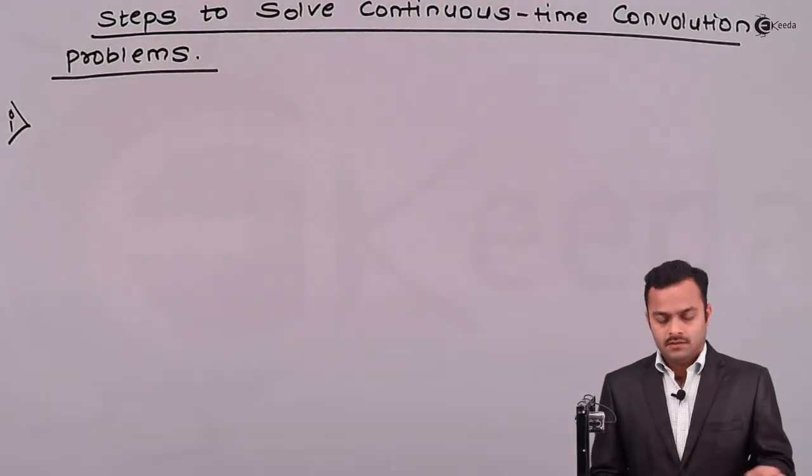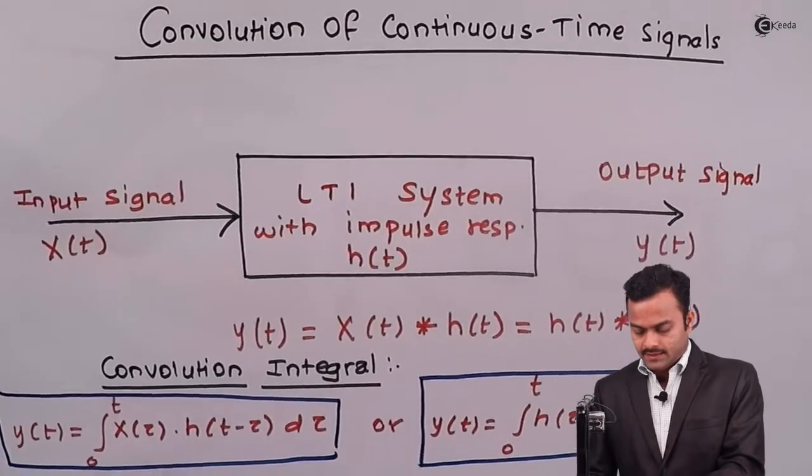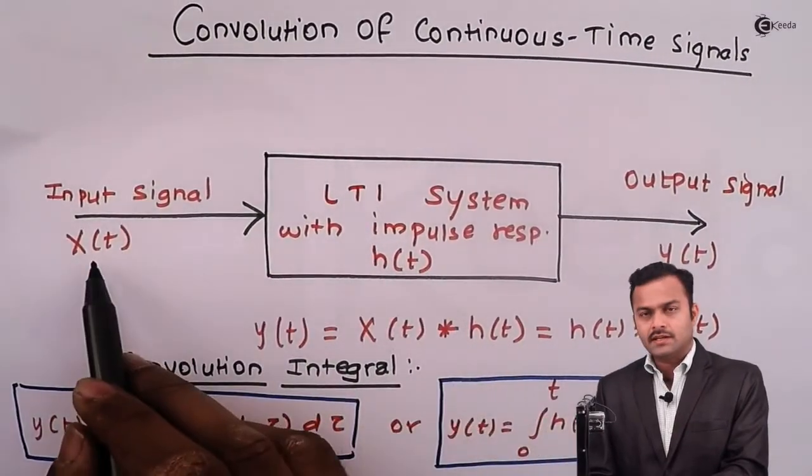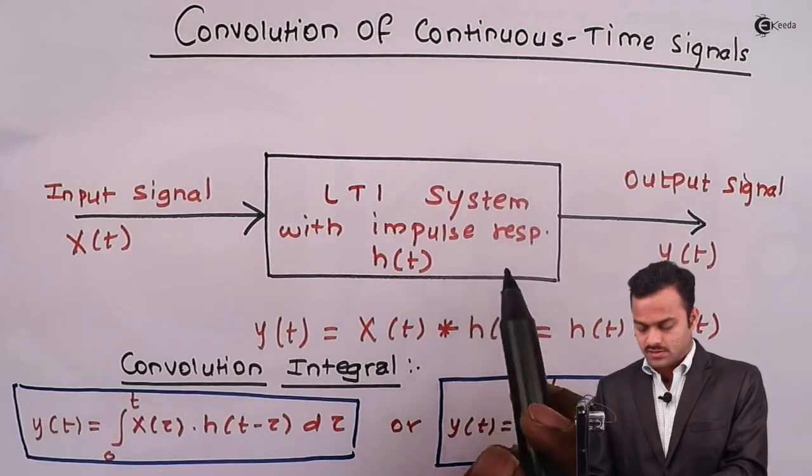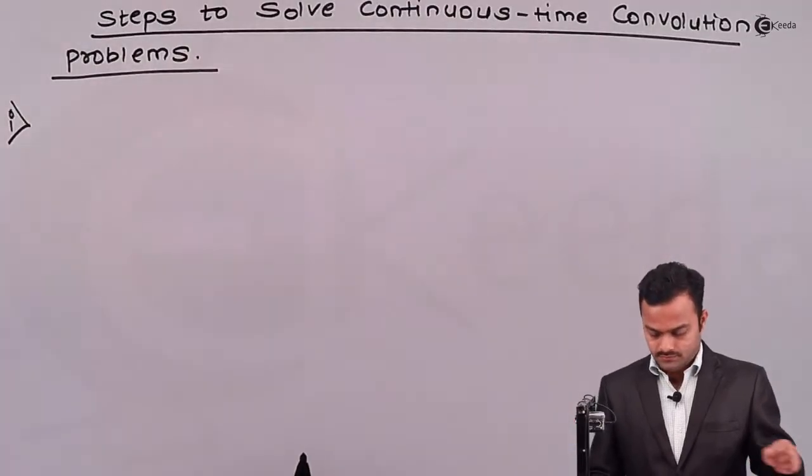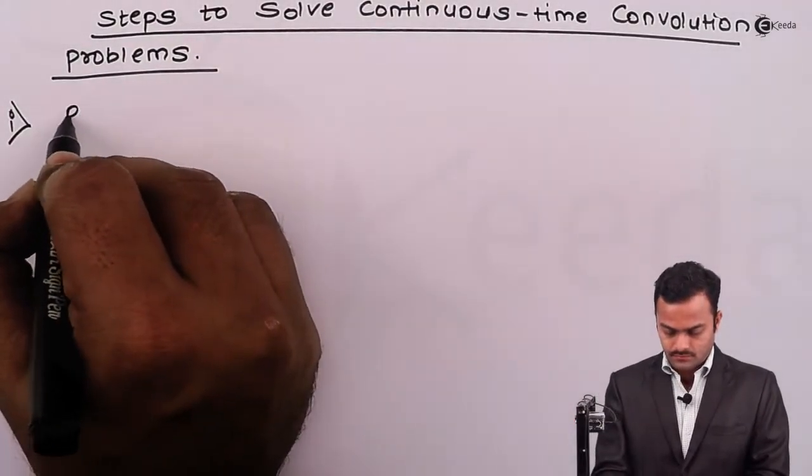Step number 1. Since we need t in the limits, hence, this original input and impulse response will replace this t by some other variable named as τ.